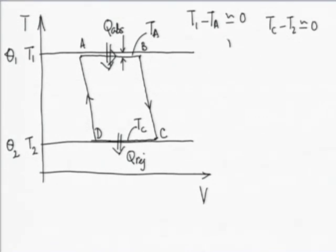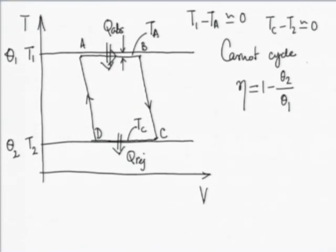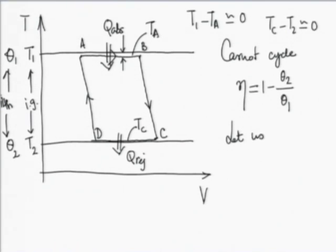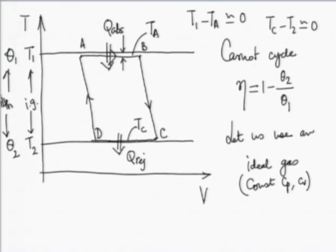For a Carnot cycle of this kind, using any fluid, the efficiency will be 1 minus θ₂/θ₁. This is by the corollary of the Carnot theorem and our definition of the thermodynamic temperature scale, where θ₁ and θ₂ are on the thermodynamic temperature scale and T₁ and T₂ are on the ideal gas temperature scale. Now let us use an ideal gas with constant C_p and C_V as the working fluid.